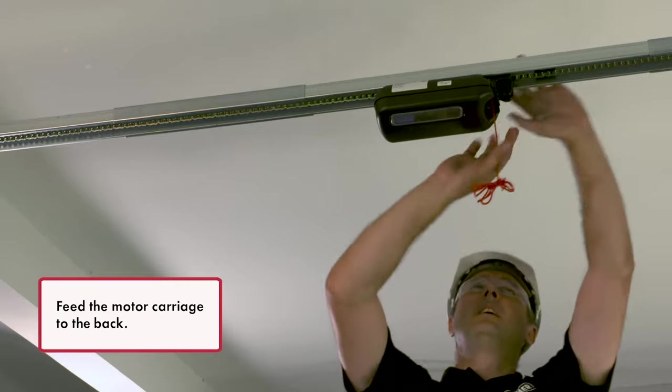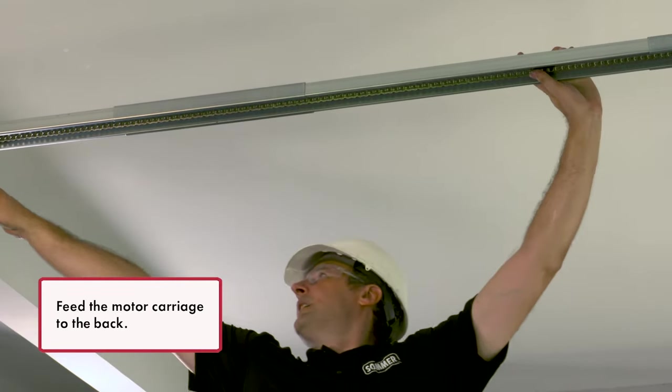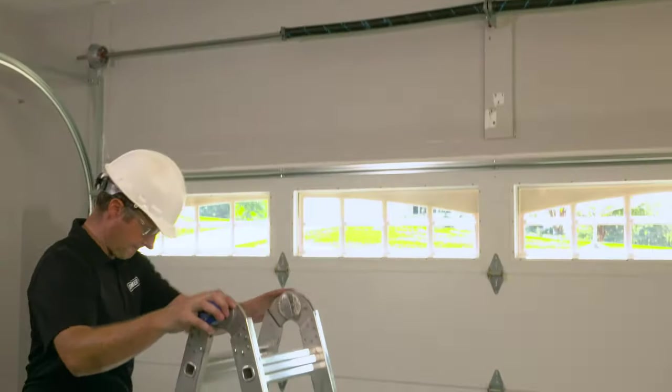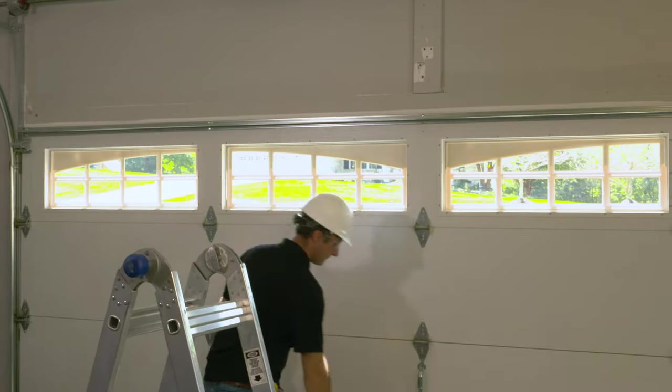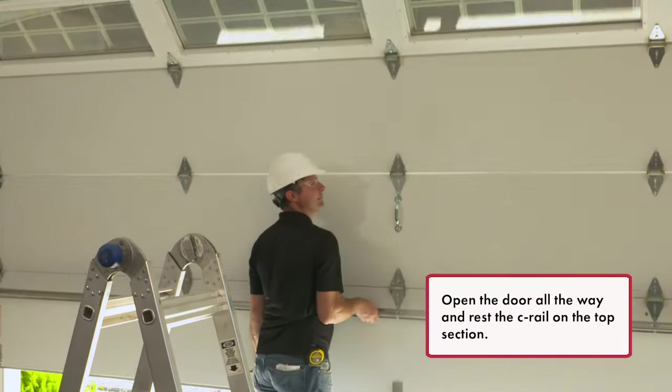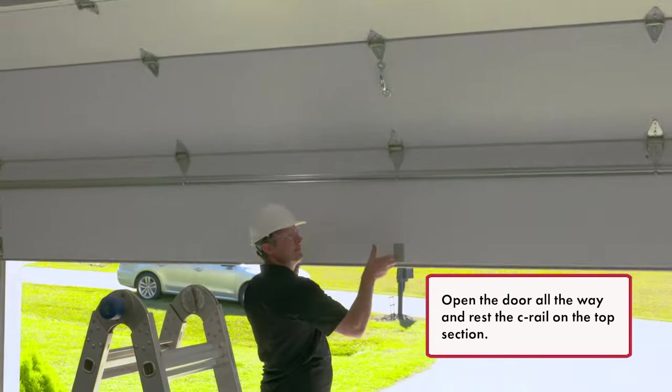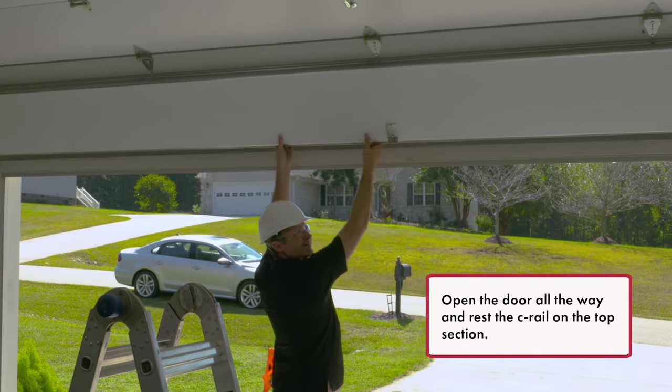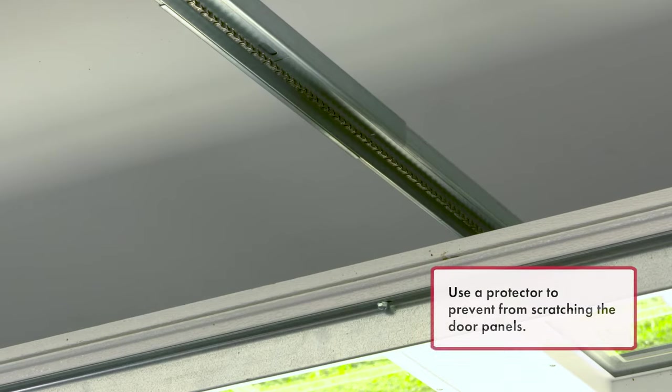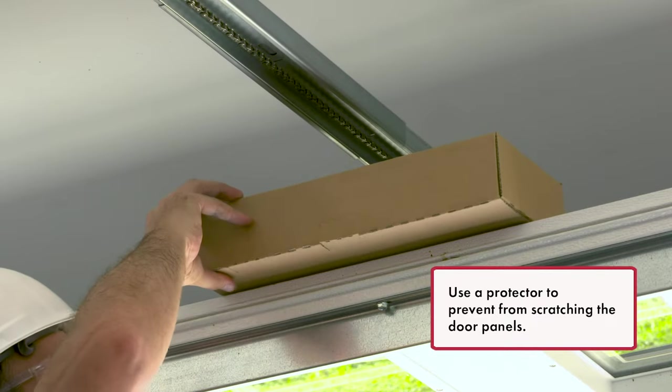Feed the motor carriage to the back. Open the door all the way and rest the C-rail on the top section. Use a protector to prevent from scratching the door panels.